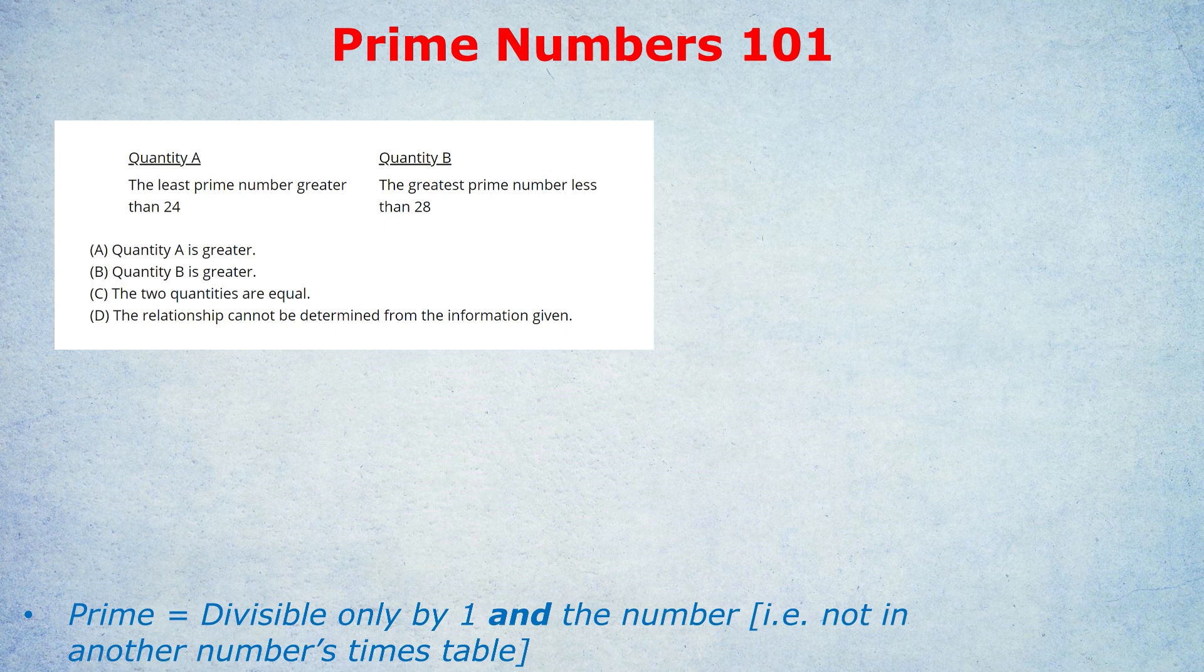Prime numbers come up all the time on the GRE and GMAT, and before you can start answering the questions, there are a few basic things you need to know. First, what is a prime? A prime number is a number divisible only by one and that number. This is why the number one is not a prime number - the first most common mistake. It's only divisible by one, whereas a prime number needs to be divisible by two things: itself and one.